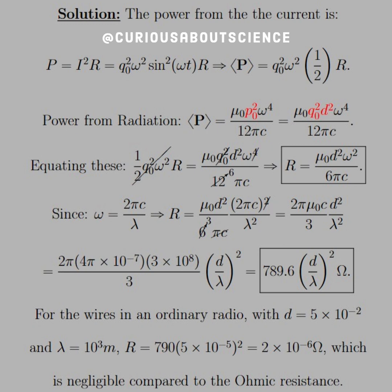And so, plugging those two facts in, we get 790 times 5 times 10 to the negative 5, since we're taking 10 to the negative 2 and dividing it by 3. Negative 2 minus 3 gives us negative 5. Square that, and we see that we get 2 times 10 to the negative 6 ohms, which is negligible compared to the ohmic resistance.